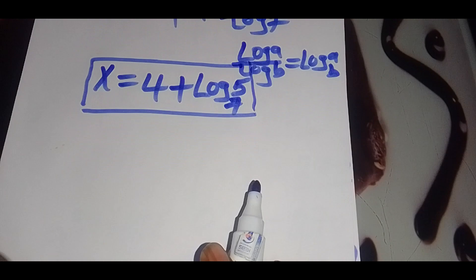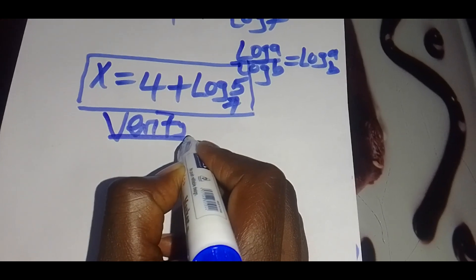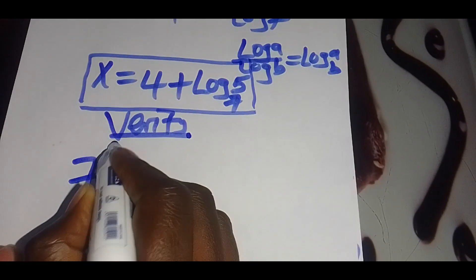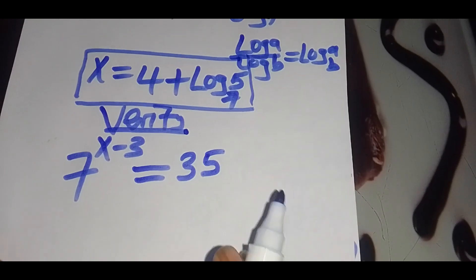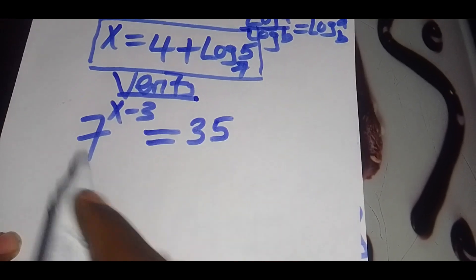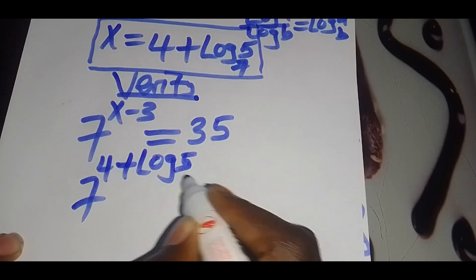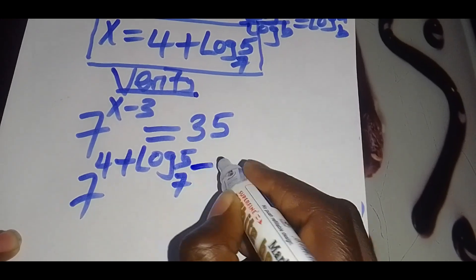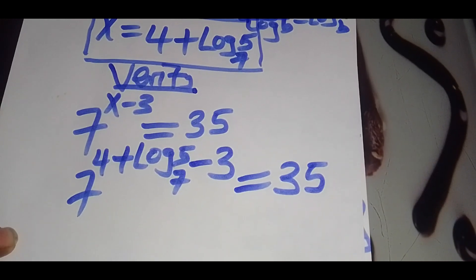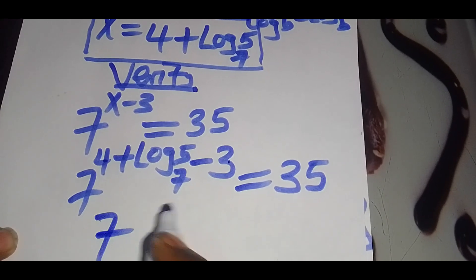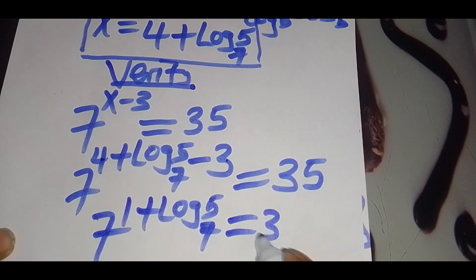Let's verify if this value of x is correct by substituting it back. We substitute x equals 4 plus log 5 to base 7, so we have 7 raised to (4 plus log 5 to base 7 minus 3). This is 4 minus 3, giving us 7 raised to (1 plus log 5 to base 7), which is supposed to equal 35.